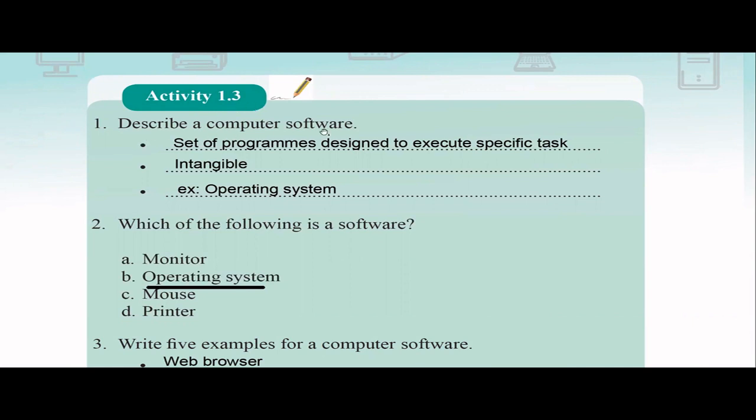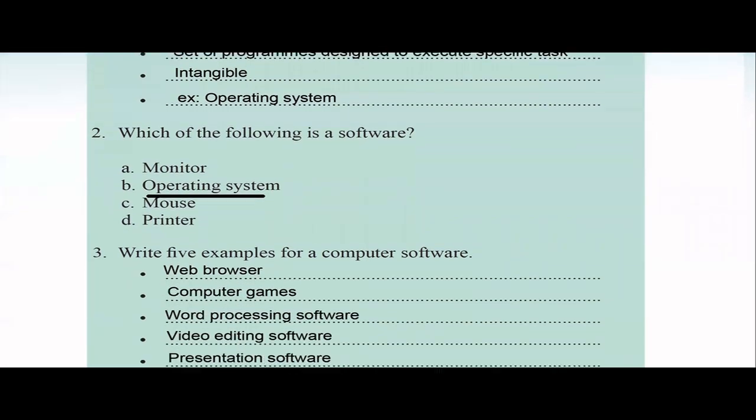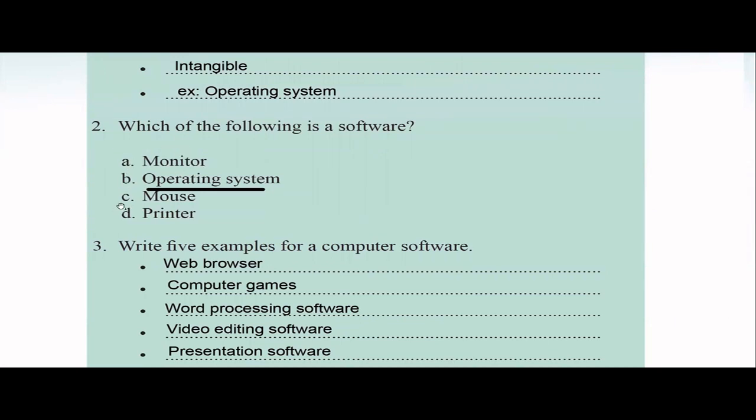So Activity 1.3: Describe a computer software. So computer software is a set of programs which is designed to execute a specific task using the computer, right? So usually software is intangible, you cannot touch. So that is the main definition of a software. And when you're giving a description in the exam, especially it would be better, it would be nicer if you can write some examples or show the examiner that you have more understanding about this one. So try these exam tips. So definitely you can improve your marks. So I have given an example: operating system is a computer software. And in the next run, they're asking which of the following is a software. So monitor is output device, mouse is an input device, printer is an output device. So operating system itself is the software. So answer is B.